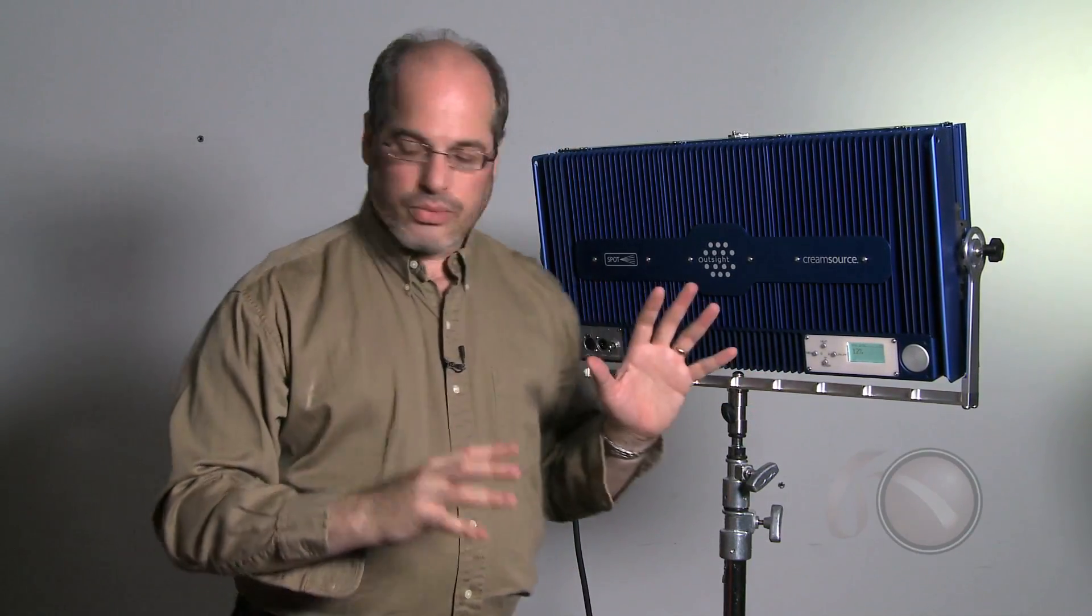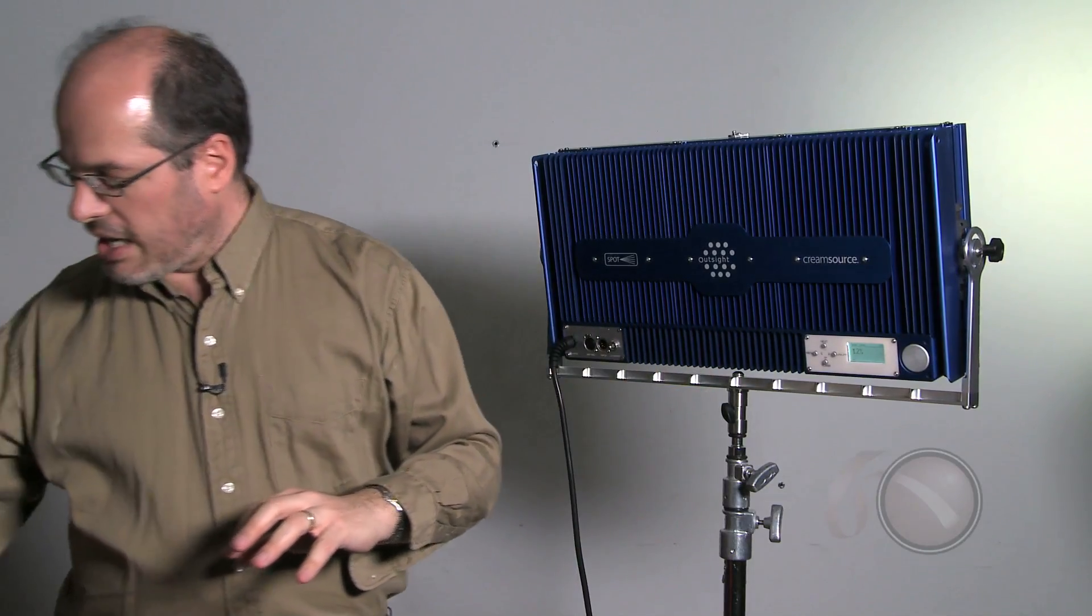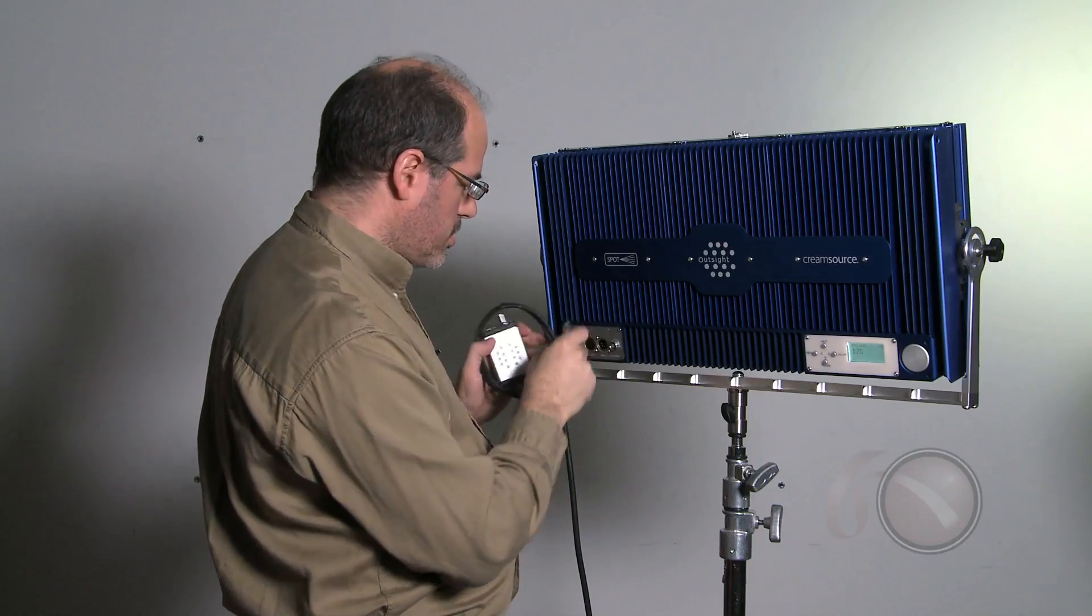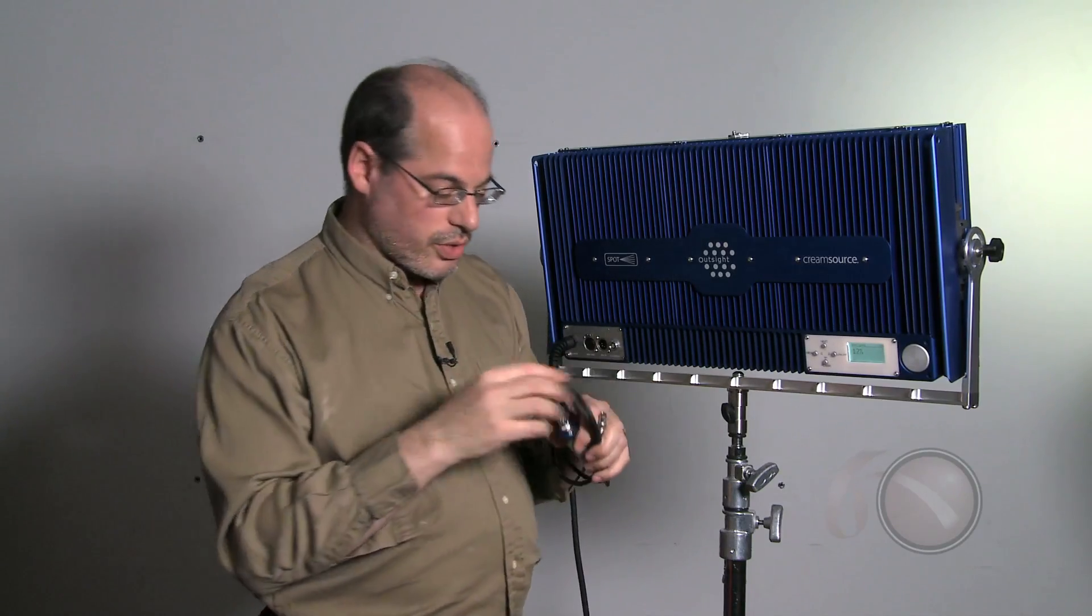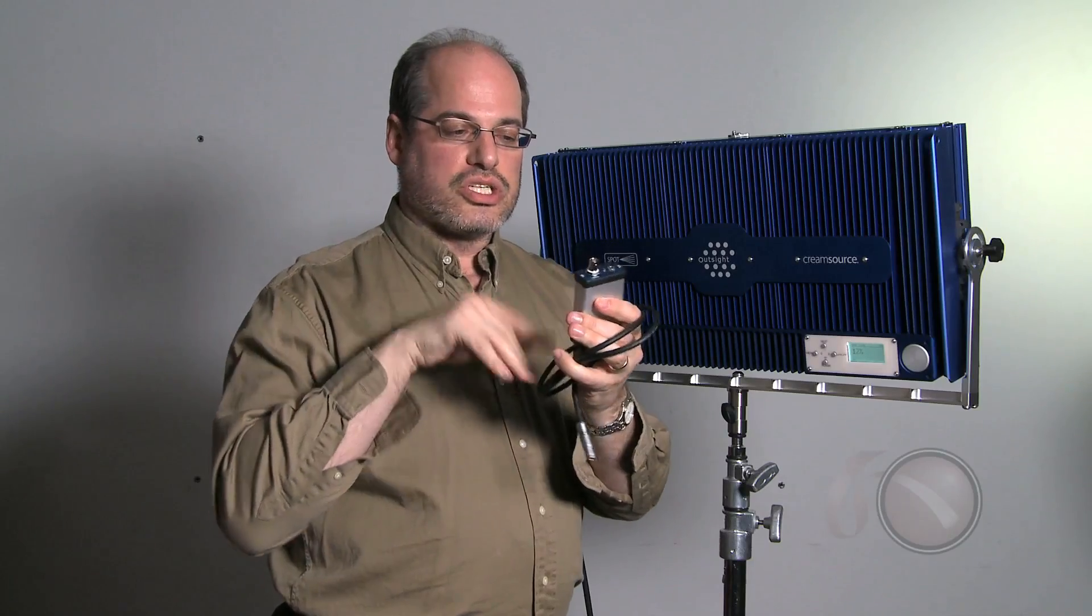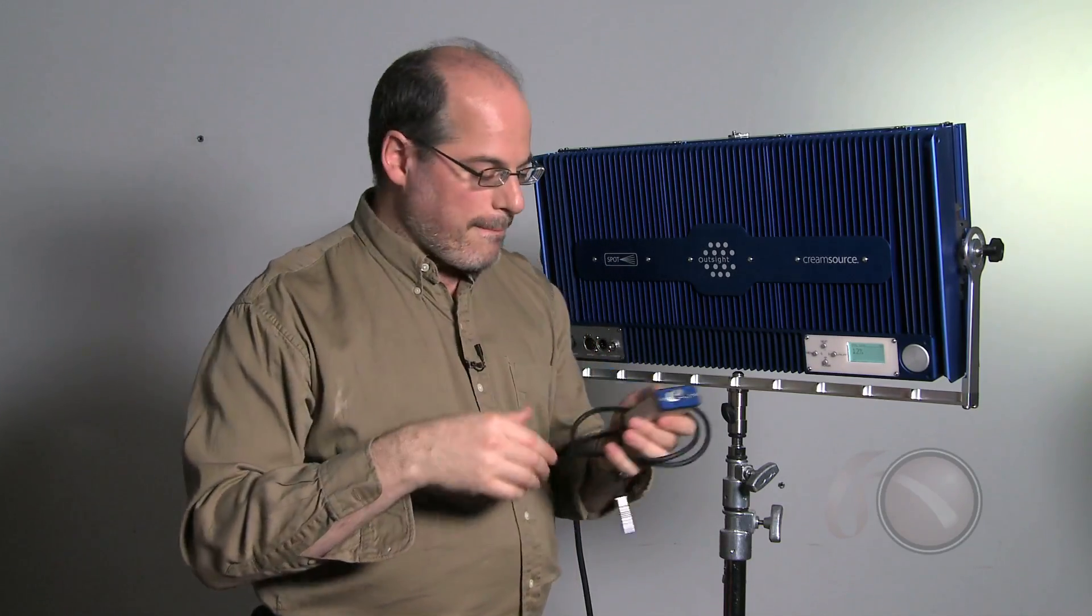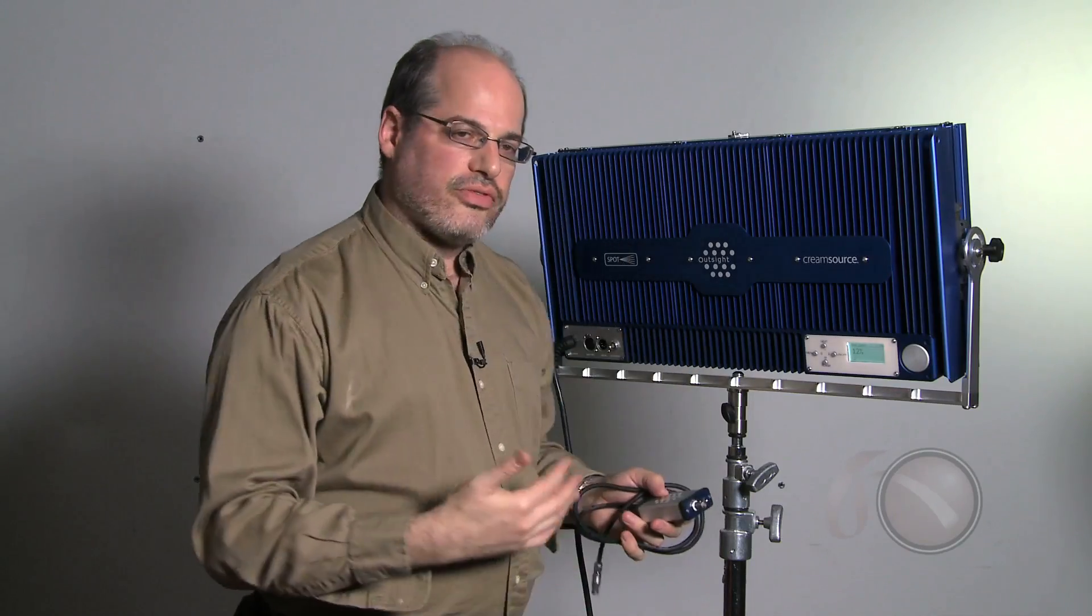Another function on this light which is really unique is this box, which is the sync box for it. It plugs in right here, and then I can plug the remote into it. What's important is this plug. That is where your Genlock connection goes, or blackburst, from your video camera.